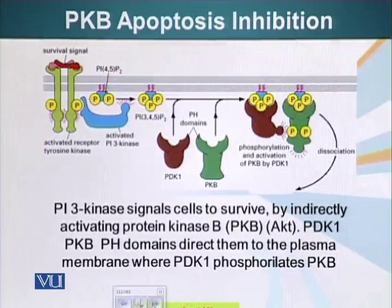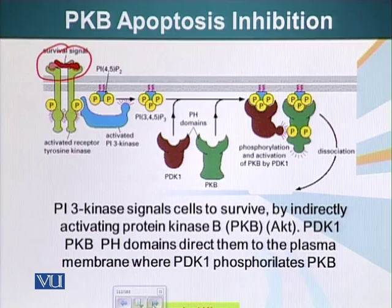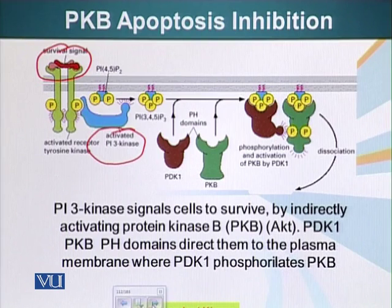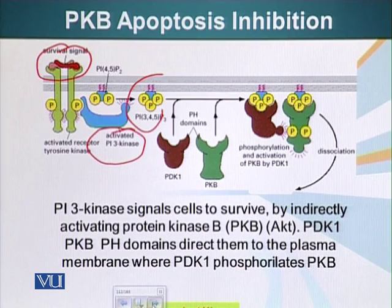Receptor tyrosine kinases, when they bind their ligand, cross-phosphorylate each other — we have seen that. They activate PI3 kinase, which we have also talked about. PI3 kinase phosphorylates PIP2 and generates a PIP3 molecule. This PIP3 molecule can bind proteins which have a PH domain.